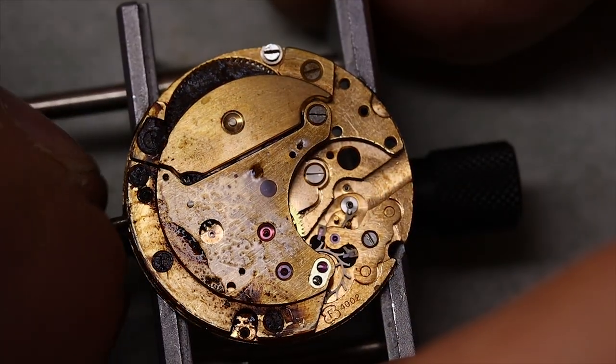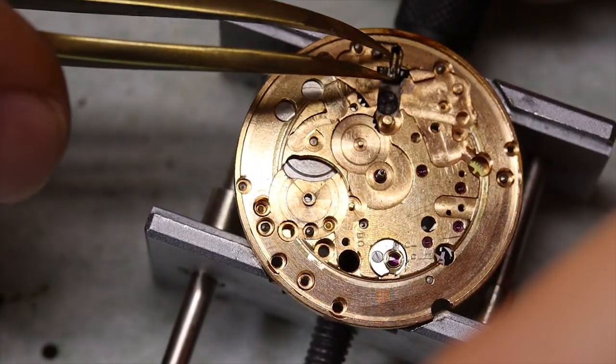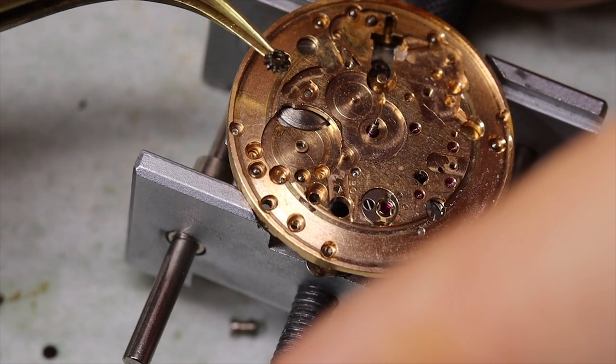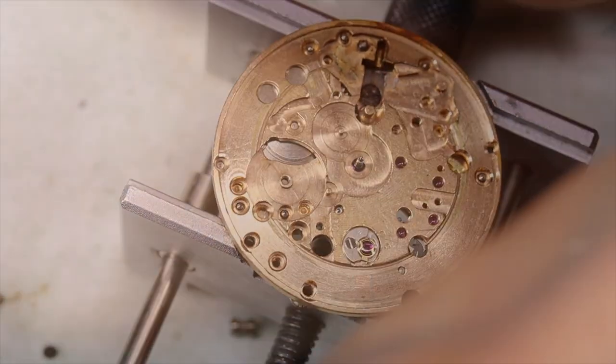All right, so we've given the screw loosener a little bit of time to work, so we see now a few more of the screws actually do come out. So we can take the setting lever off, and then the sliding pinion and the winding pinion.